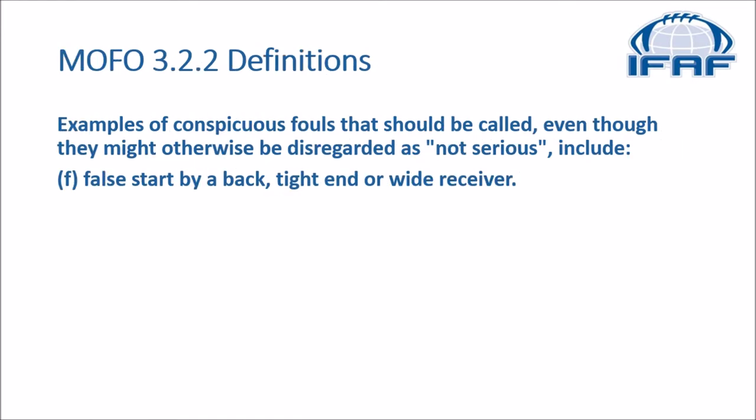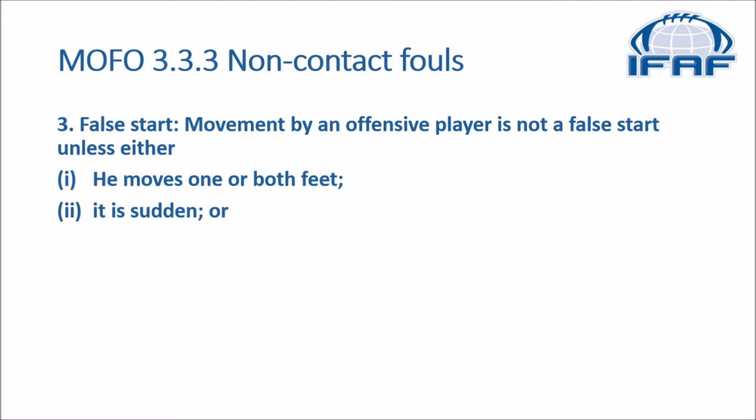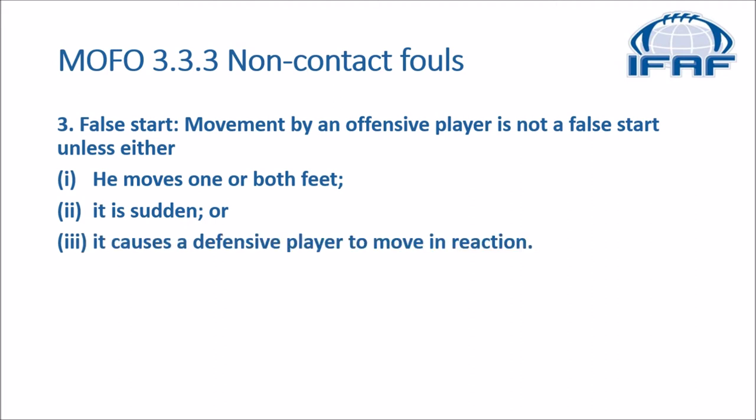In the MOFO, we go to section 3.2 definitions. Examples of conspicuous fouls that should be called, even though they might otherwise be disregarded as not serious, include F: false start by a back, tight end, or receiver. In section 3.3 non-contact fouls, false start says movement by an offensive player is not a false start unless either: 1, he moves one or both feet; 2, it is sudden; or 3, it causes a defensive player to move in reaction.